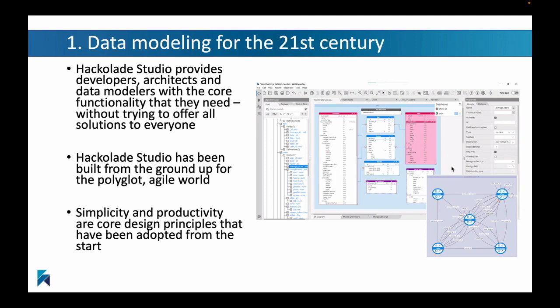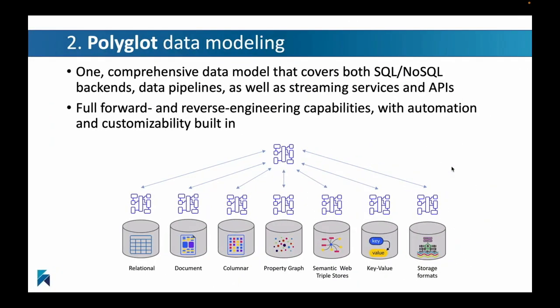When we say we're going to deliver a data modeling tool for the 21st century, it means we're going to provide developers, architects and data modelers with all the functionality they need to do their data modeling for the specific data sources and data structures they are most interested in, in a unified studio environment. We've built this studio from the ground up for this diverse polyglot agile world. The studio has many different plugins for physical targets that will allow you to do your data modeling tasks. We tie it together with polyglot data modeling, where we have one comprehensive data model covering all of the different underlying backends, data pipelines, streaming services and APIs. It delivers full forward and reverse engineering capabilities with all kinds of automation and customizability features.